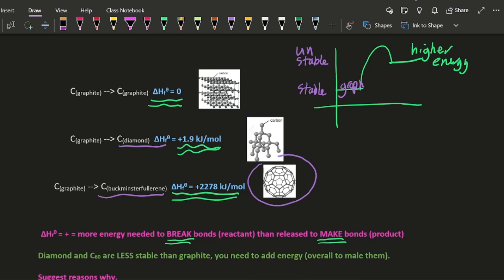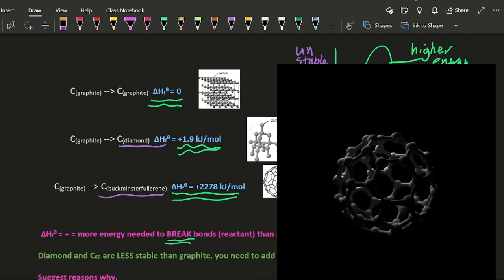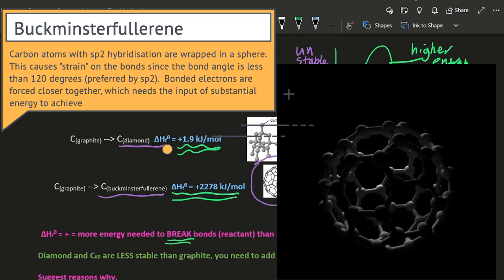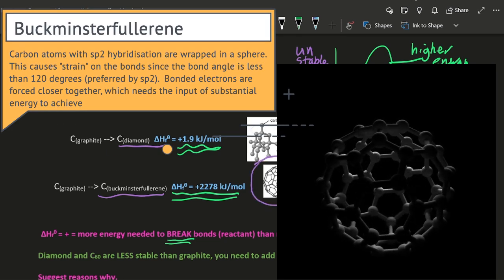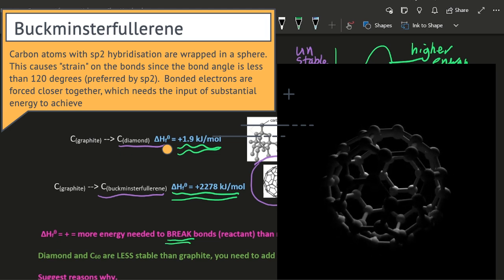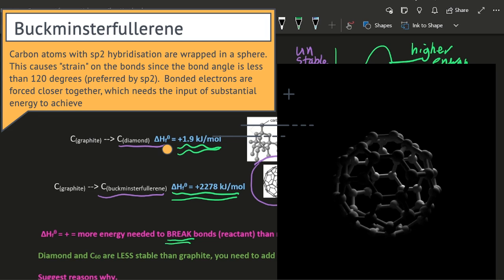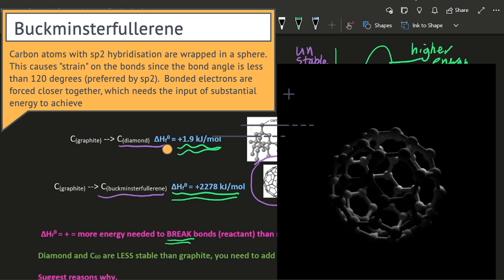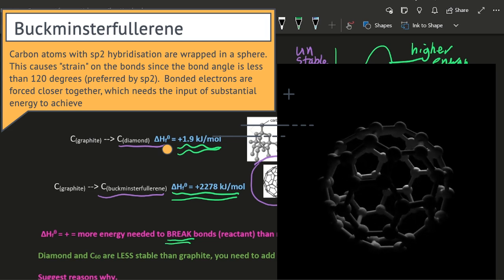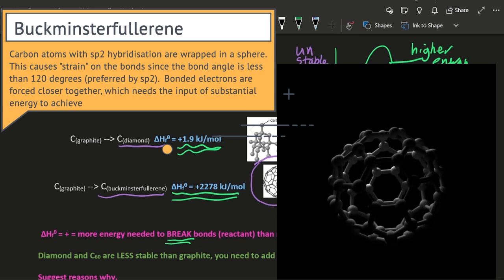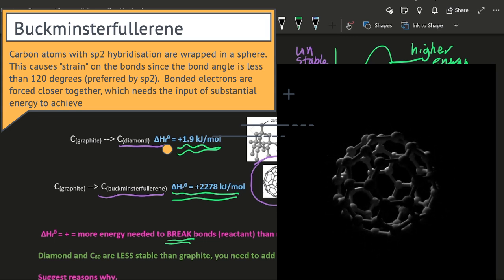So the easier one to examine is buckminsterfullerene. For the carbon atoms, they have sp2 hybridization and they're wrapped up in that sphere shape. And this causes strain on the bonds. Now the bond angle is less than 120 degrees preferred by sp2. And those bonded electrons are forced closer together. And that's going to need more substantial input of energy to put those electrons where they don't want to go, to fight that repulsive force there.